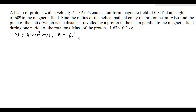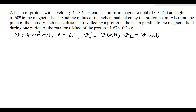The component of velocity parallel to the magnetic field is v_parallel = v cos θ, and v_perpendicular = v sin θ is the component perpendicular to the magnetic field. The magnetic field B = 0.3 Tesla.